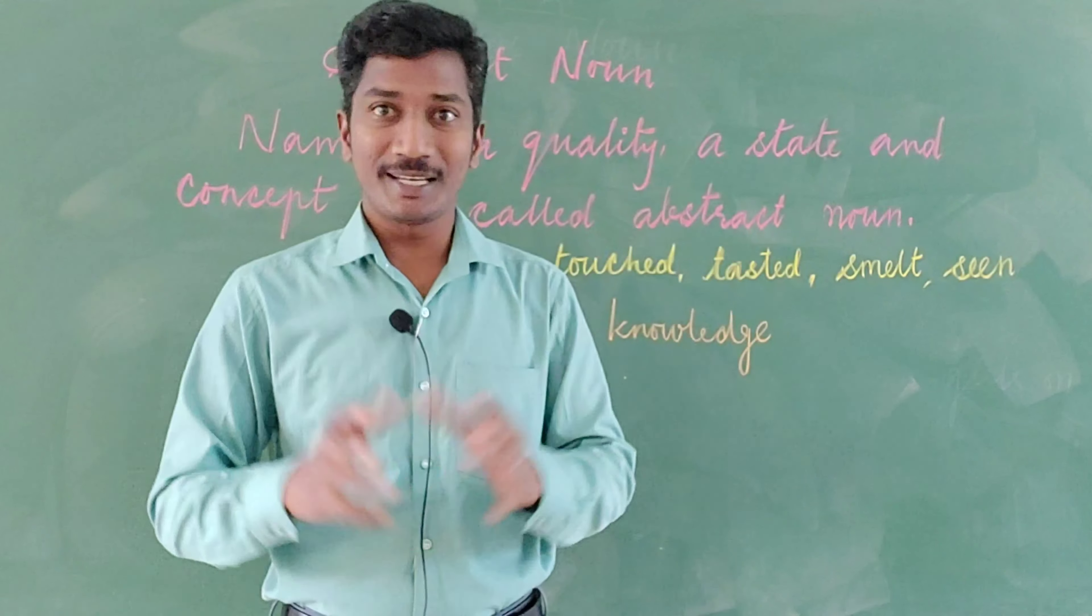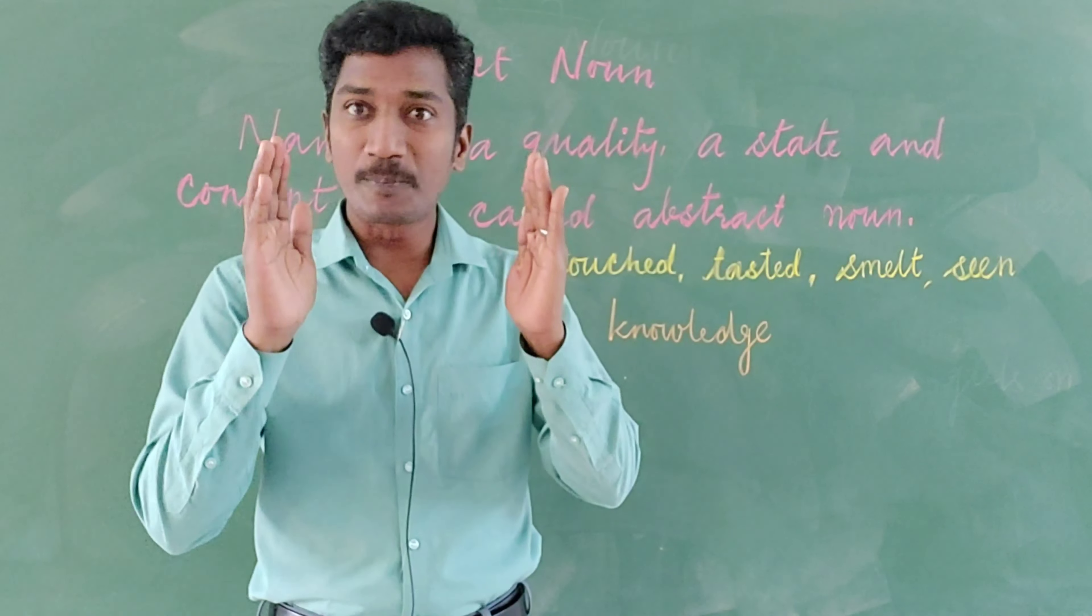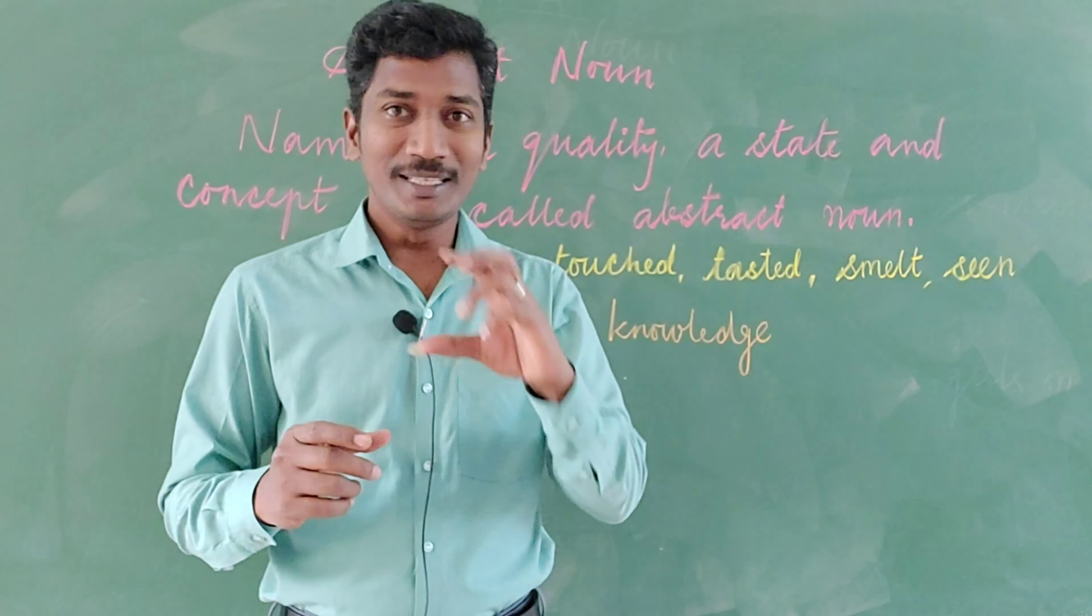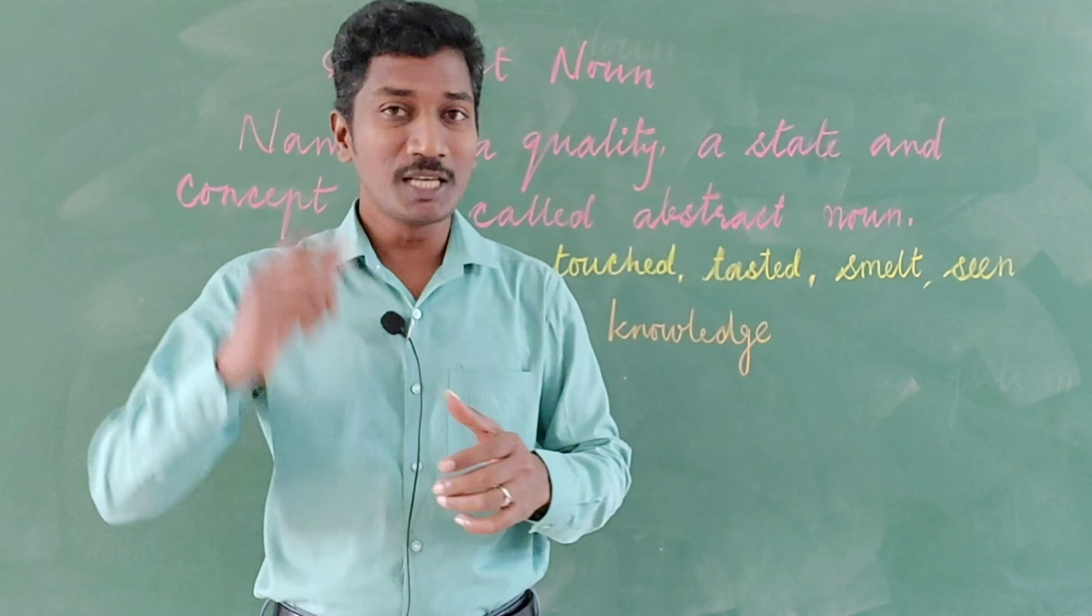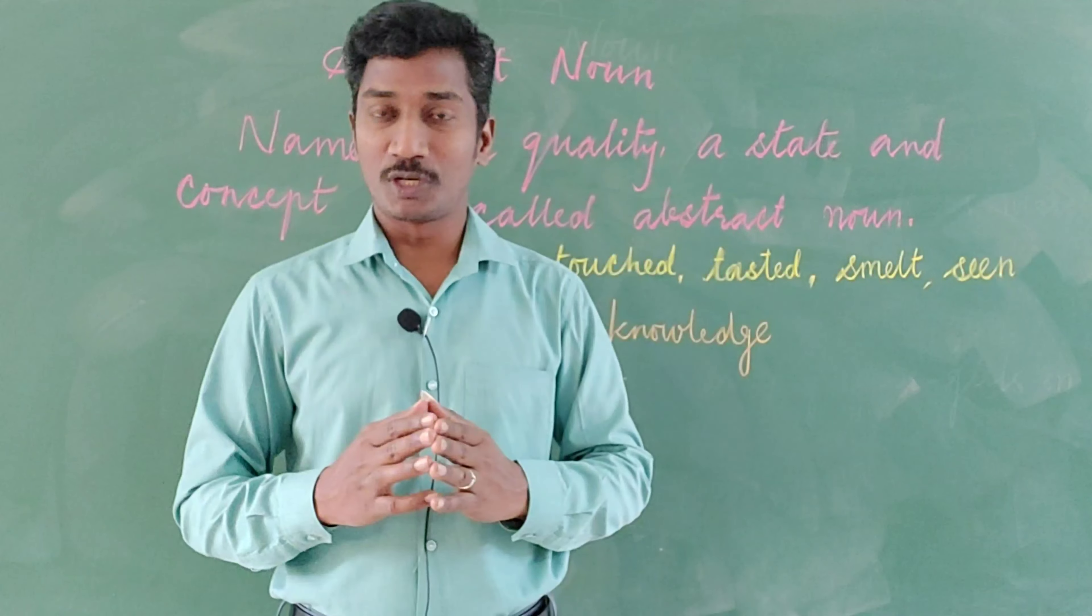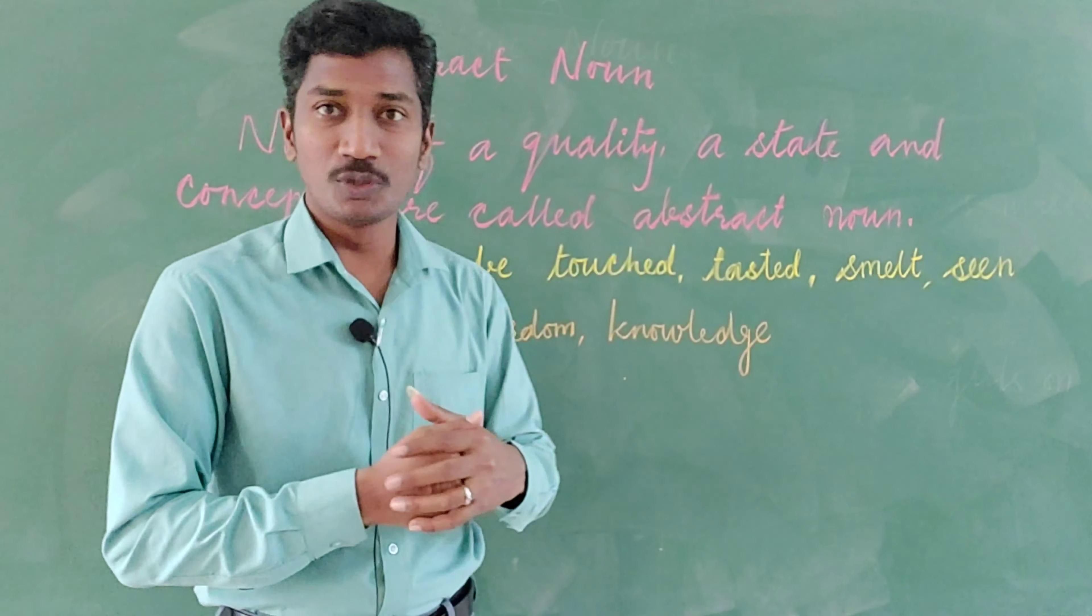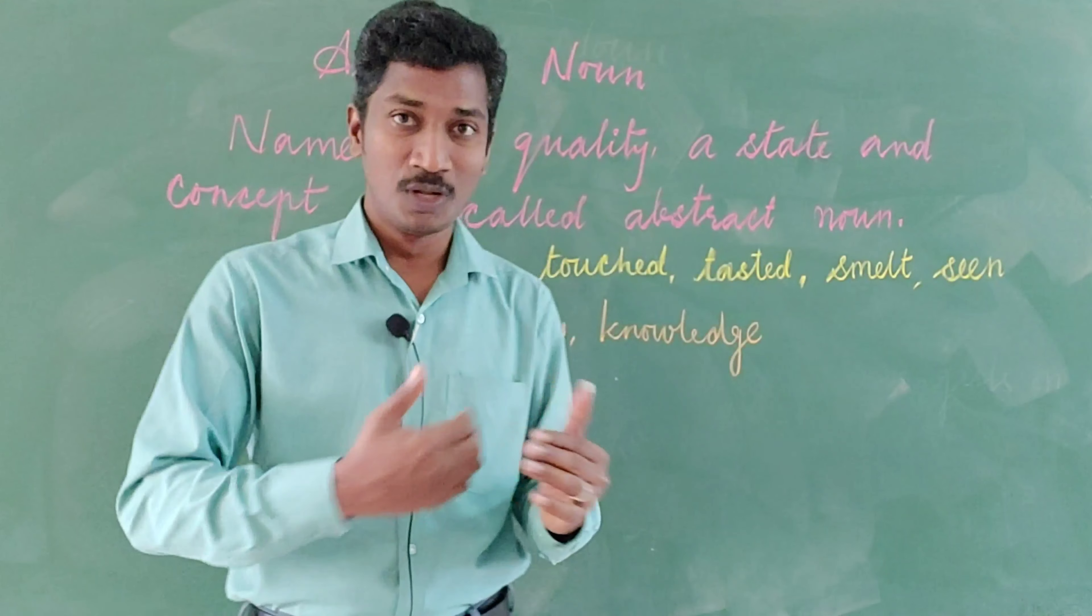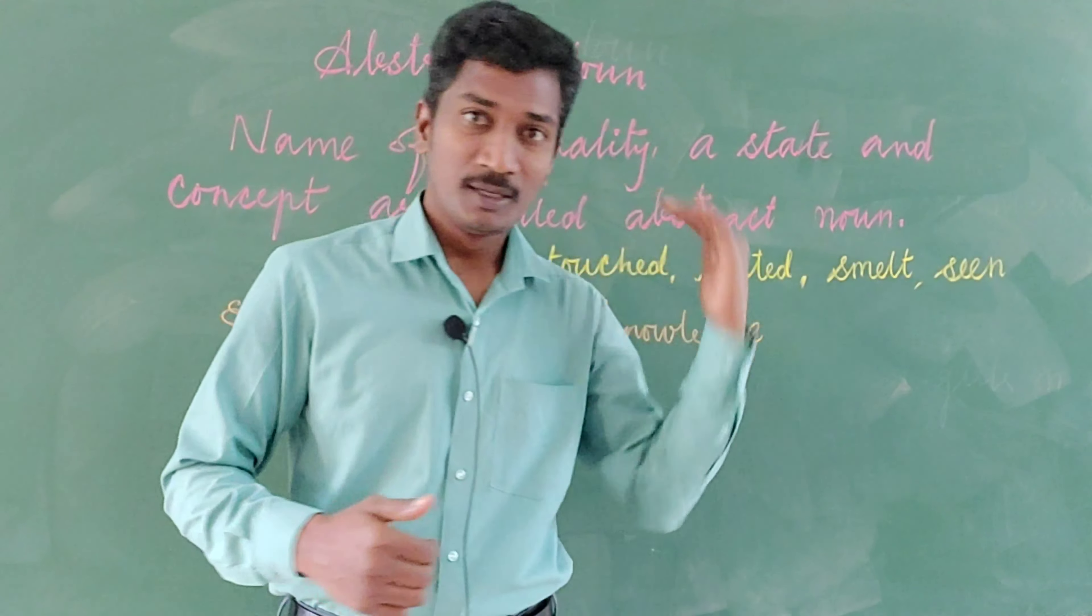First, we have to understand what this word abstract means. Generally, if you look at the meaning for abstract, it is which cannot be seen, which has to be understood and which has to be felt. So that is called abstract noun. When it comes to abstract noun, let us see what the definition is with examples.